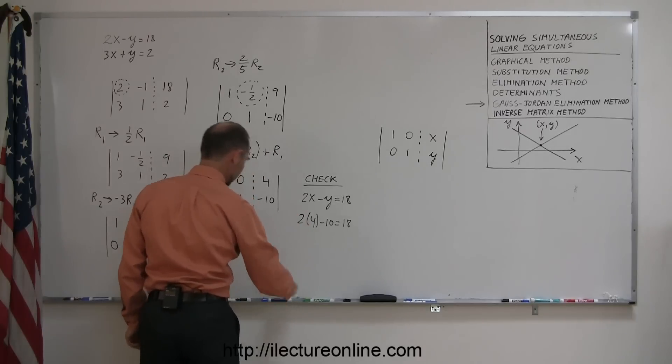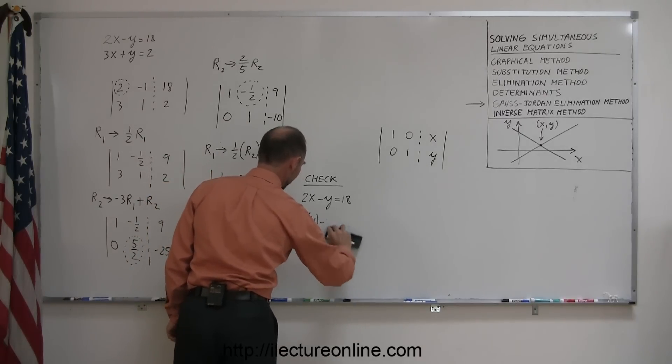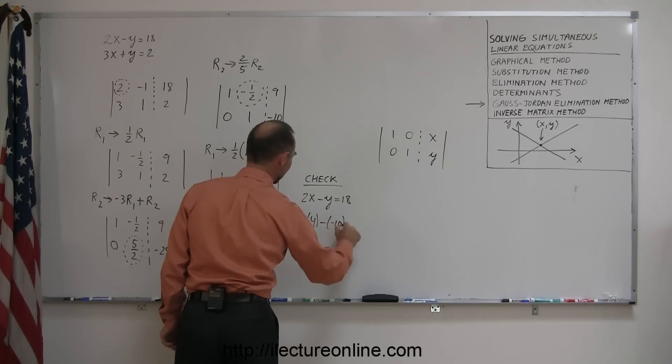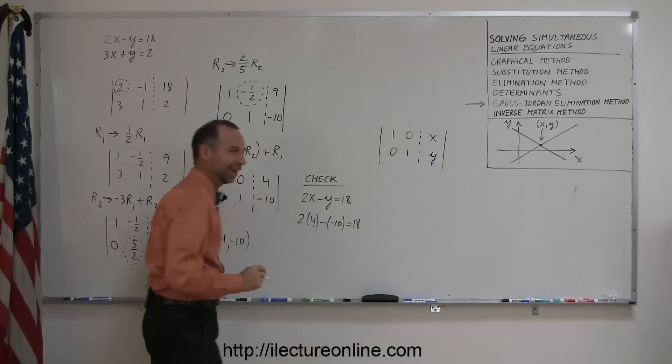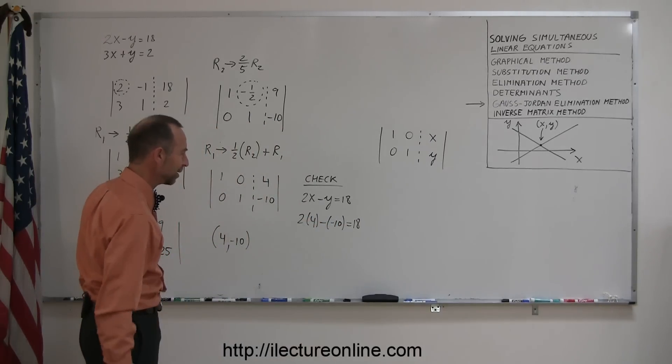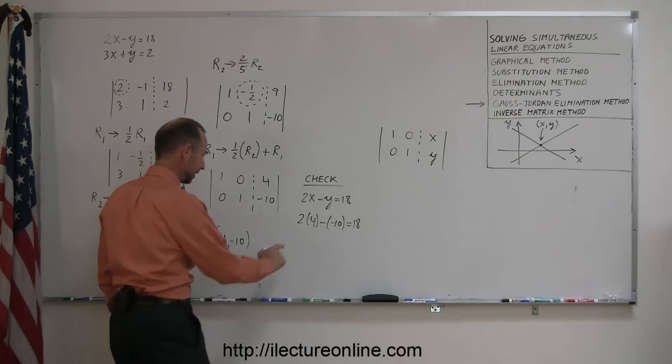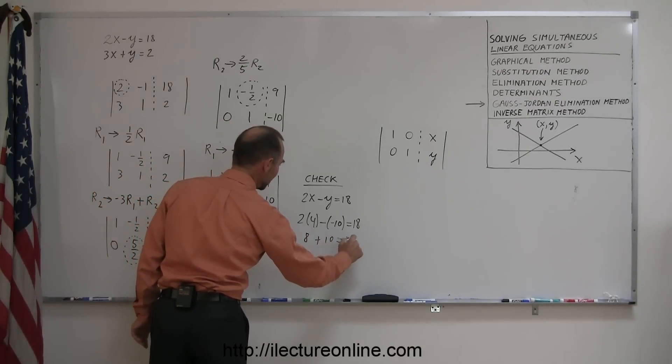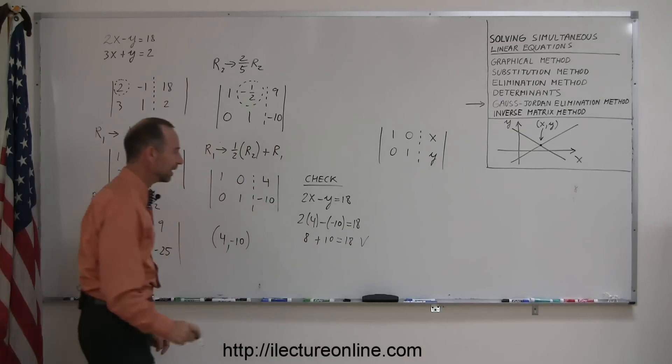Oh, I almost made a mistake in my check. Y is a negative 10, so I subtract a negative 10 equals 18. See, I realized that they weren't going to add up to the same number, so something was wrong here. So this gives me 8 plus 10 equals 18, or 18 equals 18, and that's correct.